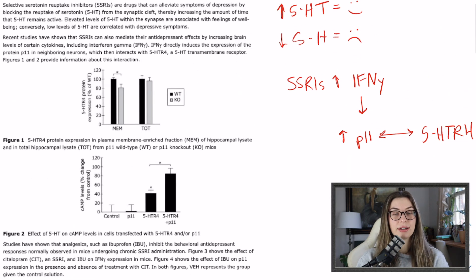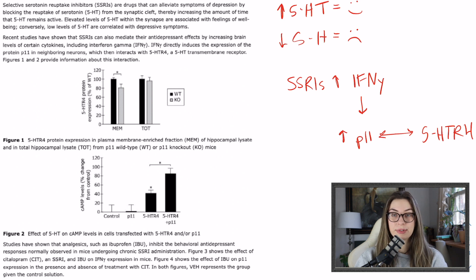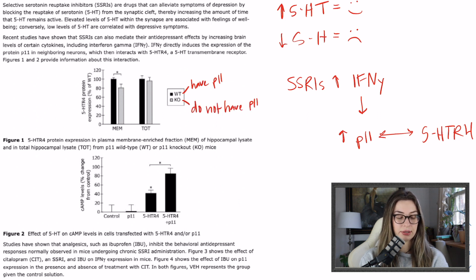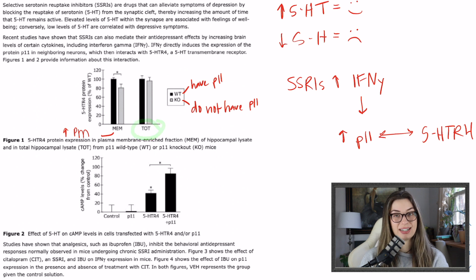Figures one and two provide information about this interaction. First, always read the figure caption. Figure 1 shows 5-HTR4 protein expression in plasma membrane-enriched fraction and total hippocampal lysate from p11 wild-type or p11 knockout mice. So we have four groups: wild-type with p11, and knockout without p11, each measured in either the plasma membrane-enriched fraction or the total hippocampal lysate.